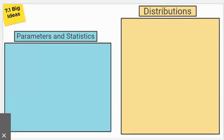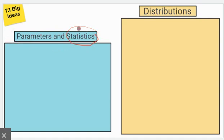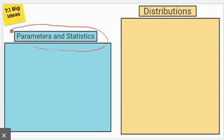Hey everyone. In this video, we're going to be looking at the big ideas for section 7.1, where we were introduced to sampling distributions. One of the things we need to start doing is using proper notation. We want to use the proper notation for our statistics and the proper notation for our parameters, so we've got to know the difference between the two and know what our symbols are.